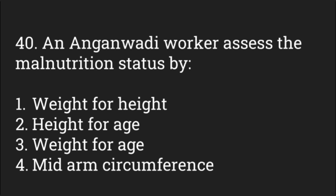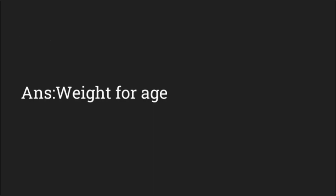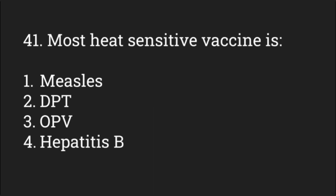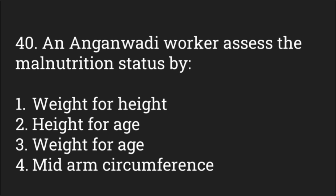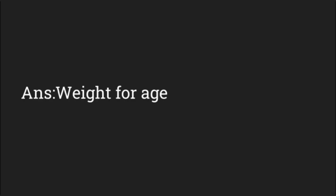An anganwadi worker assesses malnutrition status by — weight for height, height for age, weight for age, or mid-arm circumference. The answer is weight for age. Anganwadi workers are provided charts to check the weight of babies against their age.